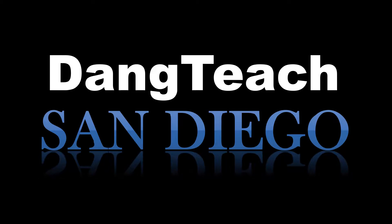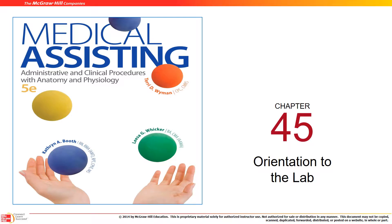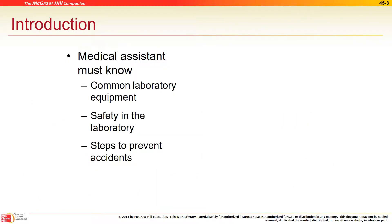All right, MED 105 — this is orientation to the lab, medical assisting, Chapter 45 in edition 5 or 6, so it doesn't matter which book you have. We'll talk about the medical assistant's role in the lab. There are two main lab settings: the office lab and an outside lab, which they call a reference lab.